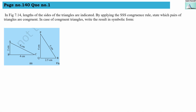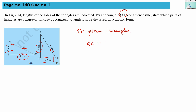Third numerical. We are applying the SSS congruence rule. From the figure, BC equals 4 cm and PQ equals 4 cm. AC equals 5 cm and PR equals 5 cm, but AB is not equal to QR as they have different measures. Since all three sides are not equal, these two triangles are not congruent with each other.